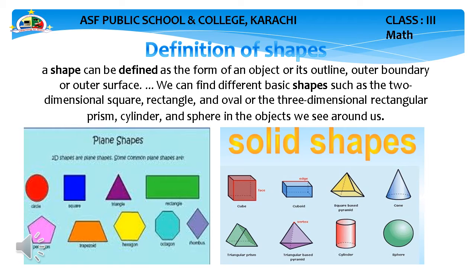Definition of shapes: a shape can be defined as the form of an object. Shape ko aap kis tarah define kar saktay hain — ek object ki shakal kaisi bani hui hai. A shape is defined by its outer line, outer boundary, or outer surface — hum us ki outer boundary ke zariye batate hain. You can find different basic shapes such as the two dimensional square, rectangle, and oval, and three dimensional rectangular prism, cylinder, and sphere — in objects we see around us.